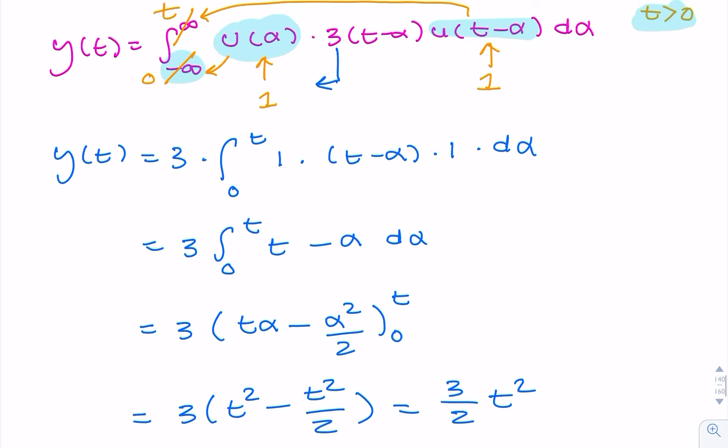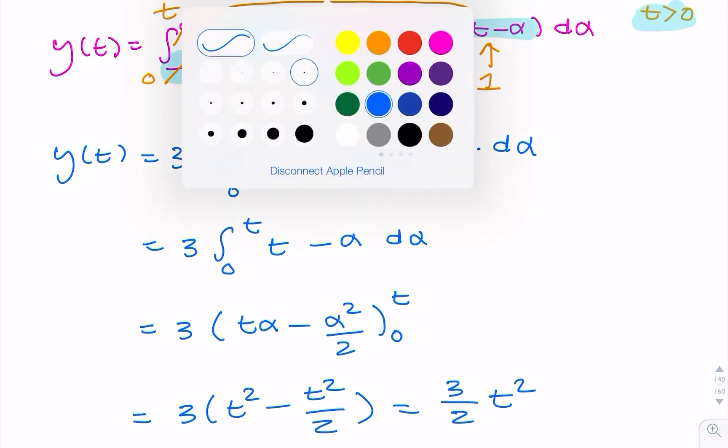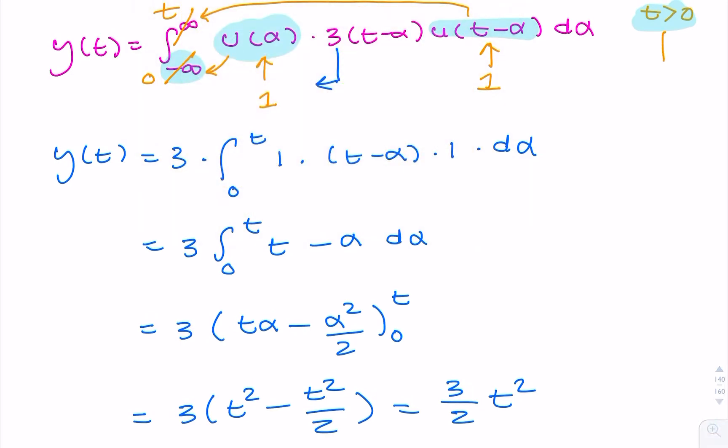Now remember our condition here that t had to be greater than zero. We acknowledge that condition by then multiplying by u(t), because u(t) is only non-zero when t is greater than zero. So this is upholding that condition. So when our condition says t is greater than zero, the way to represent that simply mathematically is to multiply your answer by u(t).